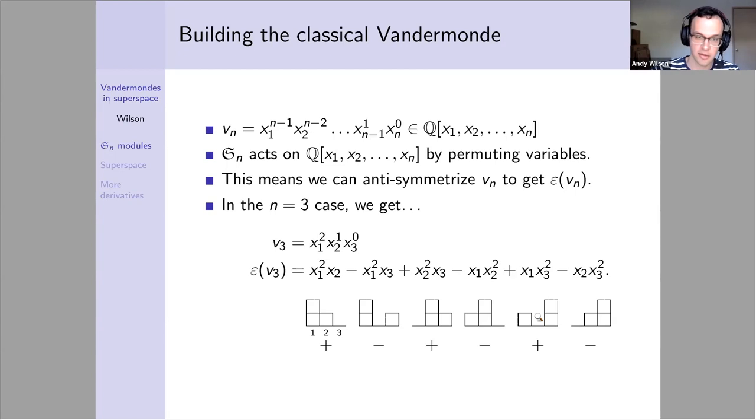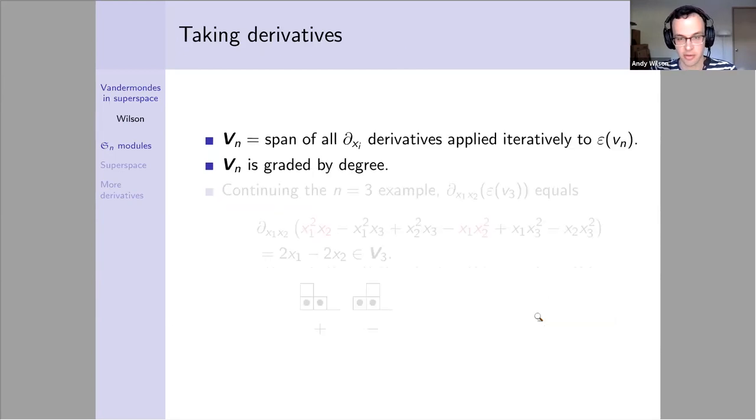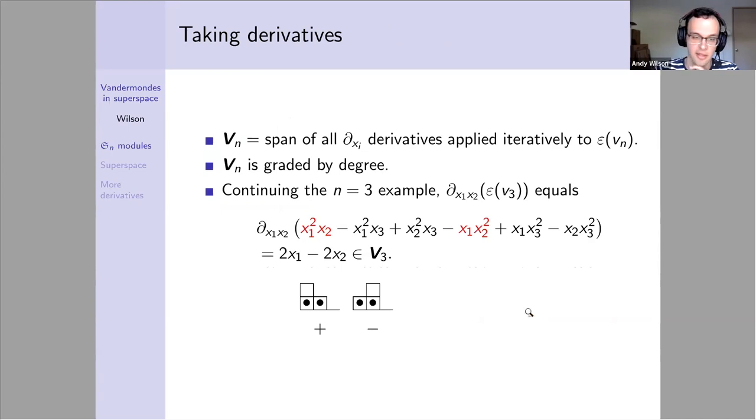We just move the boxes around between columns in all ways, getting a sign as we do this, and this is our anti-symmetrized version of what I'm calling v_3. Once we do this, we need to take some derivatives. We're going to take all possible partial derivatives in the x variables and get this capital V_n, graded by the degree of the monomials.